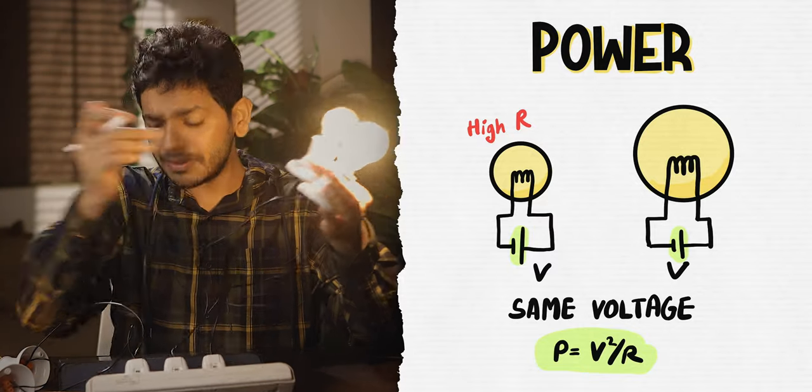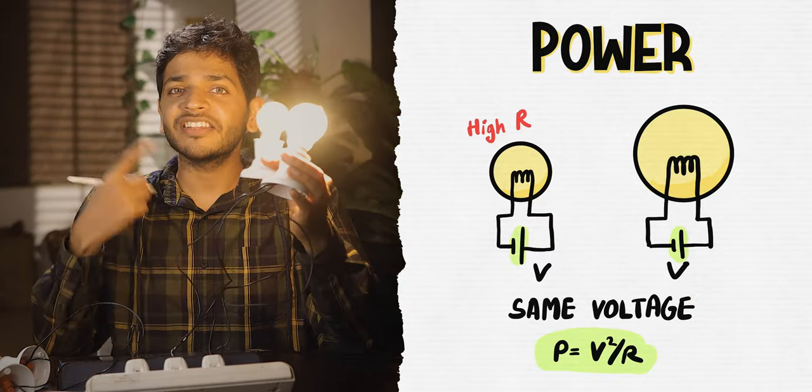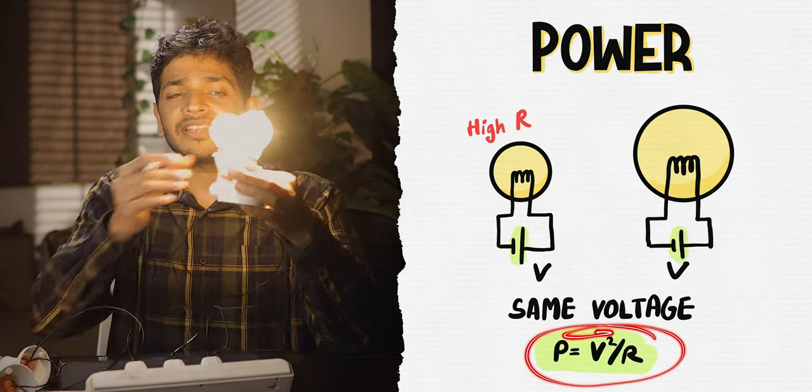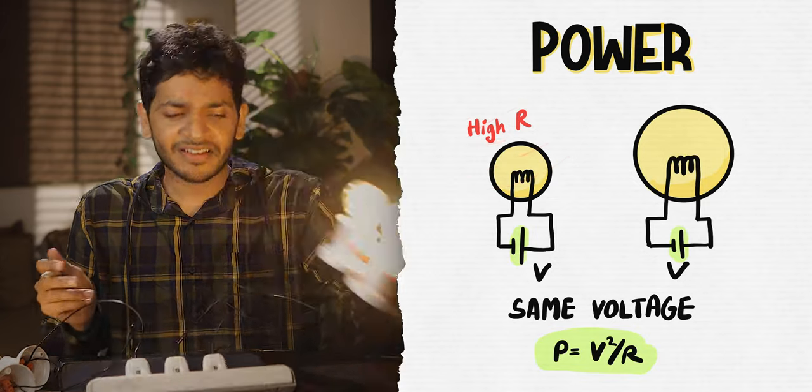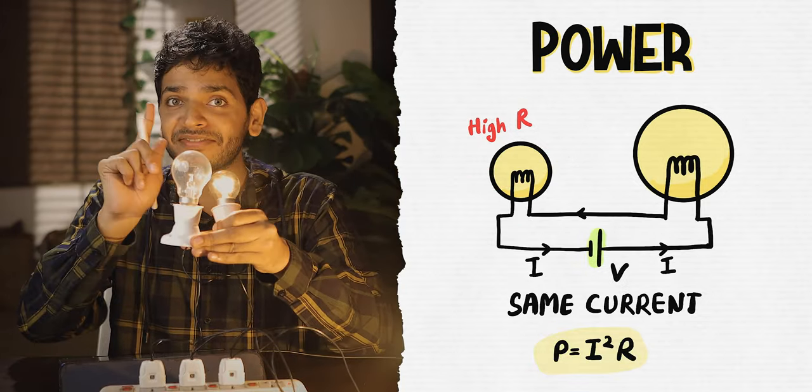Both bulbs operate at the same voltage. The power consumed can be given by V²/R. The bulb with lesser power has a higher resistance. In a series connection, they are not operating at the same voltage.